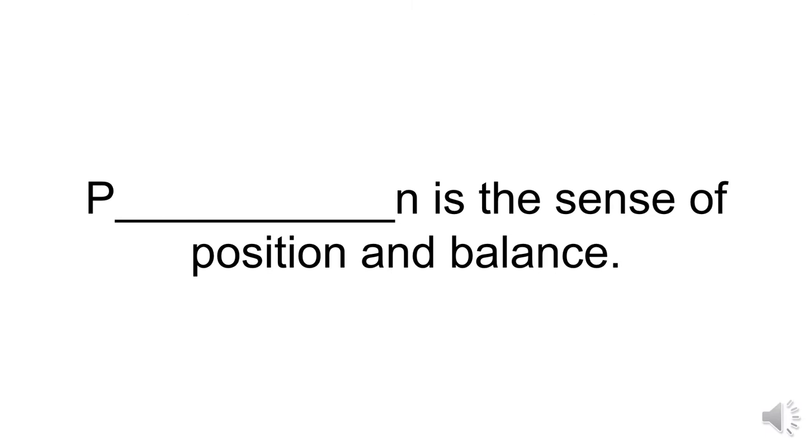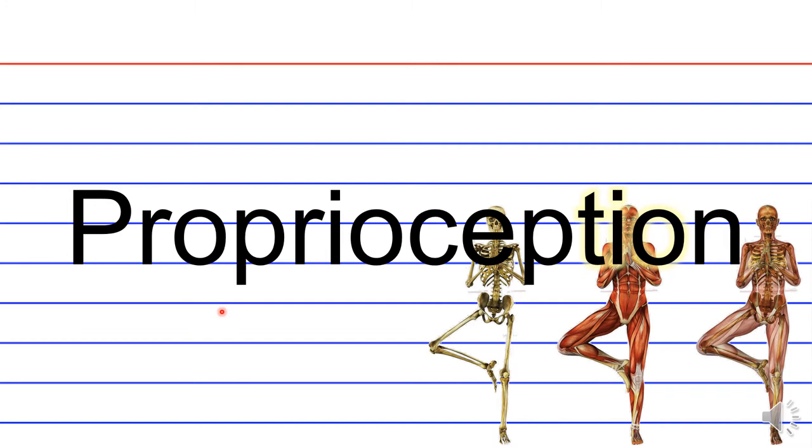So, kinesthesia is the sense of position and balance. So, what is the sense of position and balance? That would be proprioception. And people who practice yoga, I thought this was really cool, definitely develop a good sense of proprioception. Anyone who practices something involving balance will develop an extremely good sense of proprioception. Proprioception. I have trouble pronouncing this word.